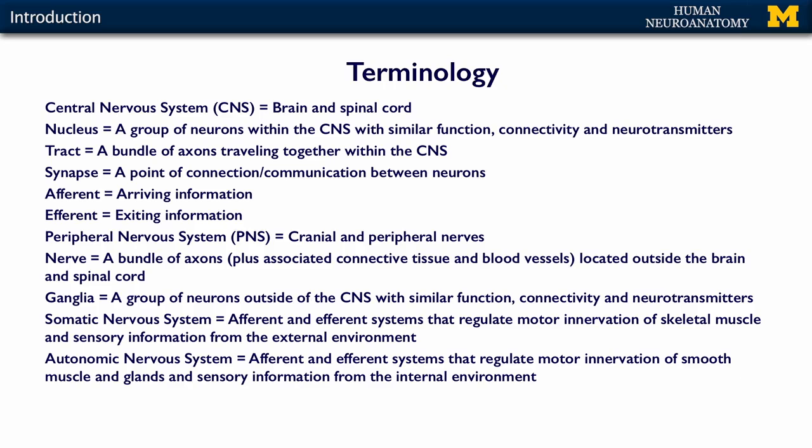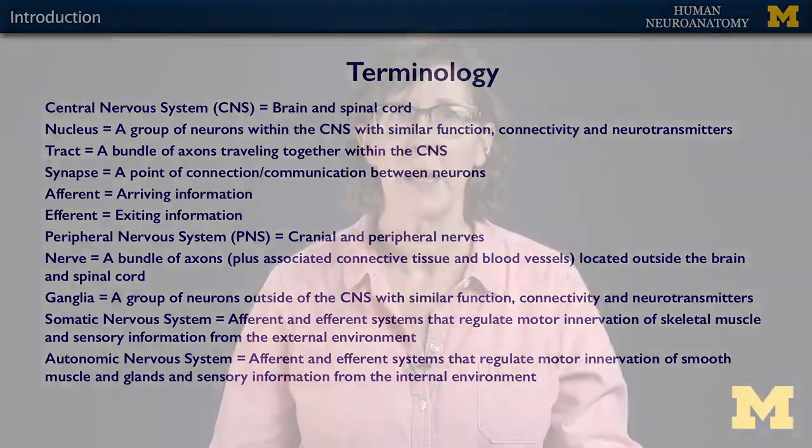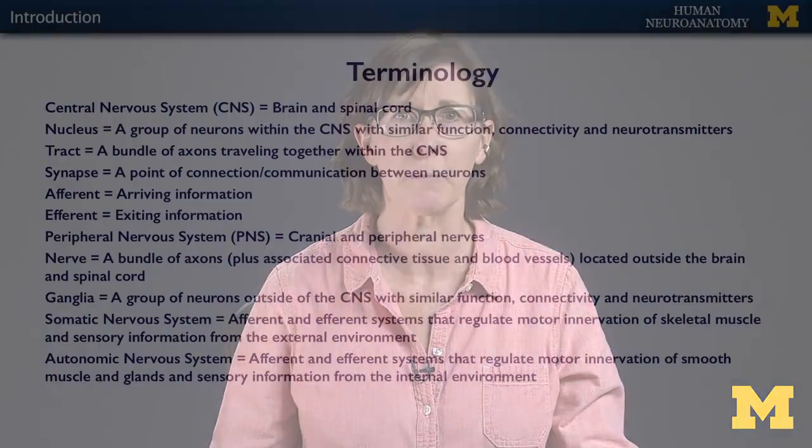Nucleus is a group of neurons within the central nervous system with a similar function, connectivity, and neurotransmitters. You'll see that word nucleus if you ever take a course in cell biology — it's a term that talks about the part of the cell that contains DNA. But in the nervous system, a nucleus is a group of neurons with similar function.